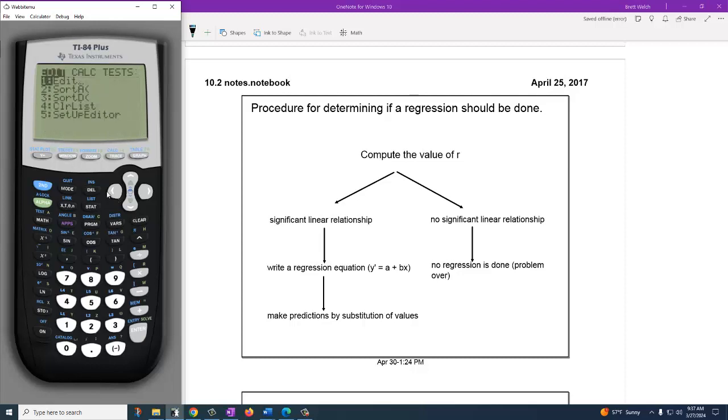Let's go ahead and run our regression. Now what we've been doing is we've been running the linreg ax plus b. If we actually just go down a little bit further, option eight has the a plus bx. So there are answers in the format that we're expected to use. We have L1, L2.